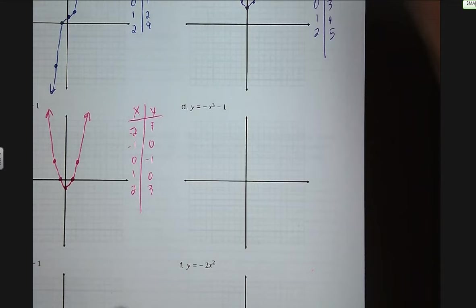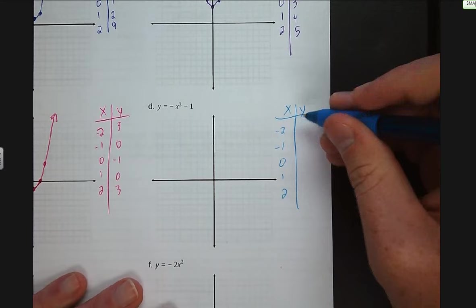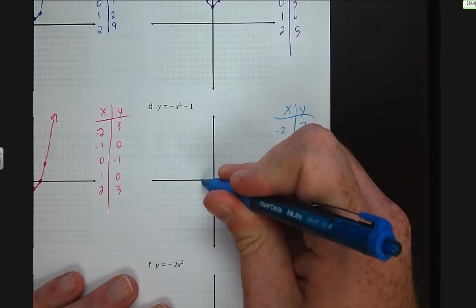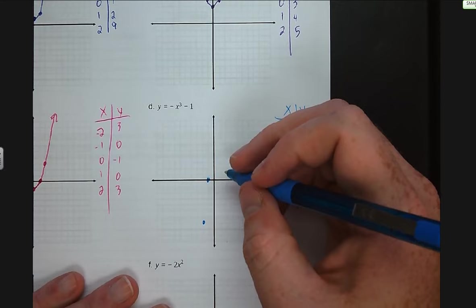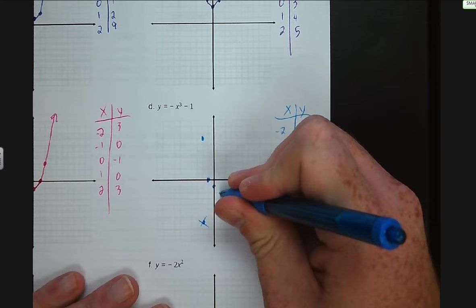You guys try letters D, E, and F and I will go over them. For D, we have x and y: negative two, negative one, zero, one, two. We solve and get 7, 0, negative one, negative two, negative nine. So we plot: negative two and negative seven, negative one and zero, zero and negative one, one and negative two, and two and negative nine.